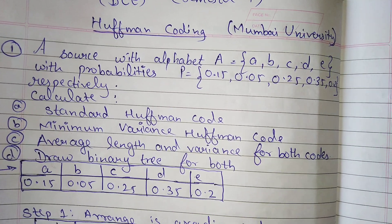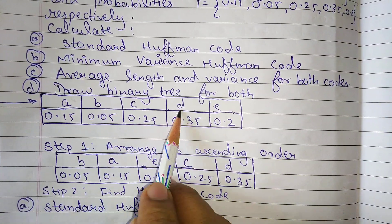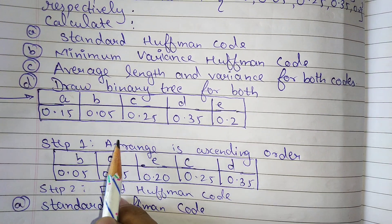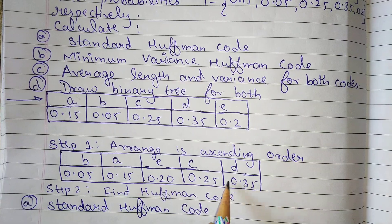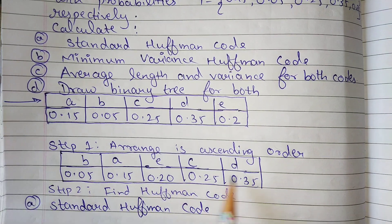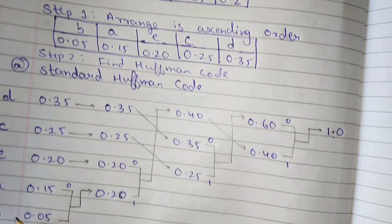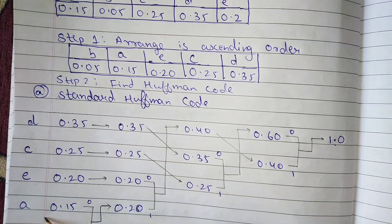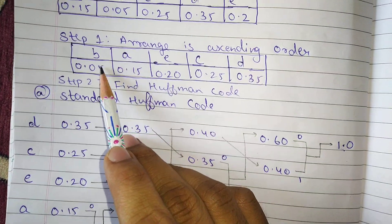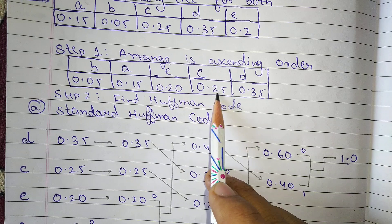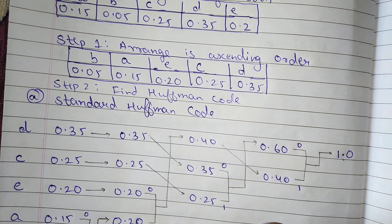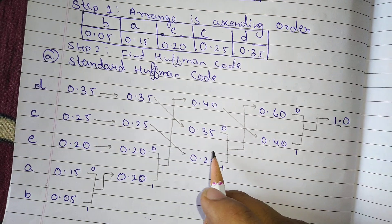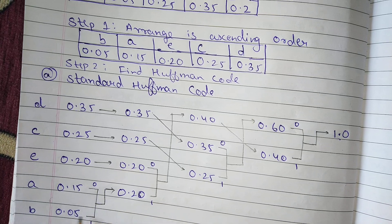First, we are given that a, b, c, d, e have probabilities 0.15, 0.05, 0.25, 0.35, and 0.20. The first thing is to arrange them in ascending or descending order. If arranging in ascending order, write from bottom to top. So we have 0.05, 0.15, 0.20, 0.25, 0.35 in ascending order from bottom to top.